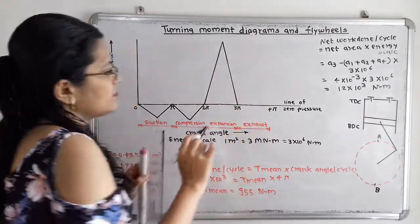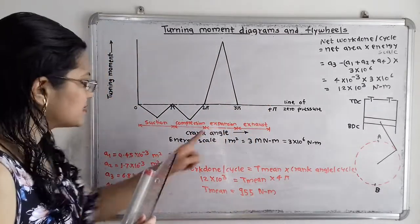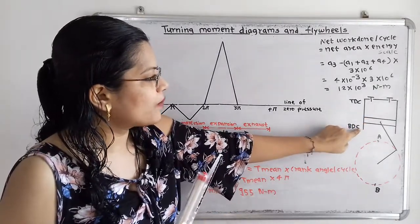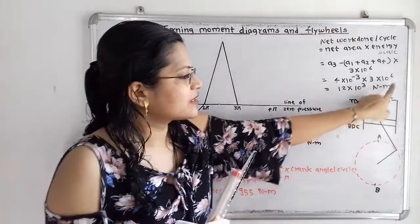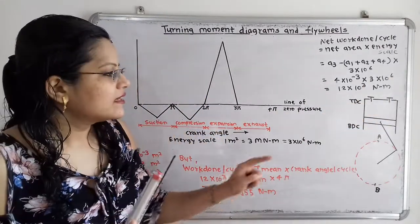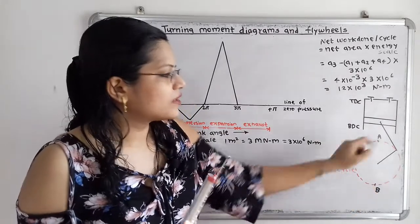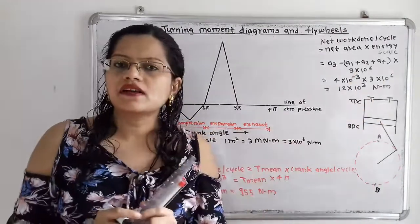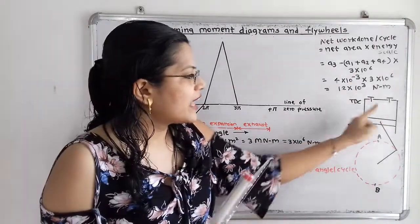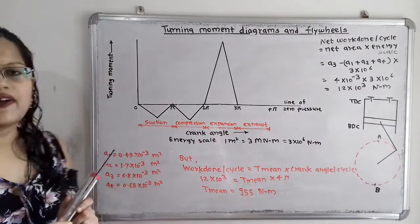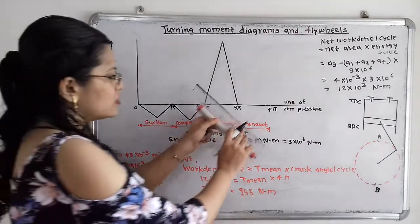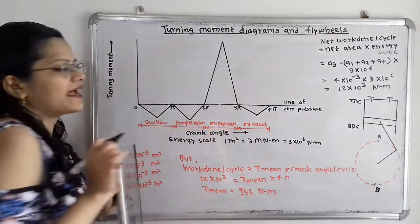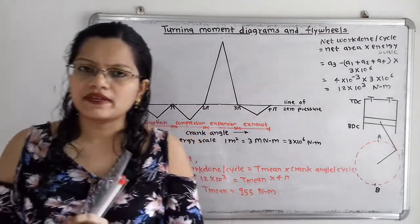In the exhaust stroke, the piston moves from BDC to TDC, the exhaust valve opens, the crank moves from point B to point A, and the burnt gases are expelled. The area A4, which is 0.65 × 10⁻³ m², is shown as a triangle below the line of zero pressure. This completes the turning moment diagram.